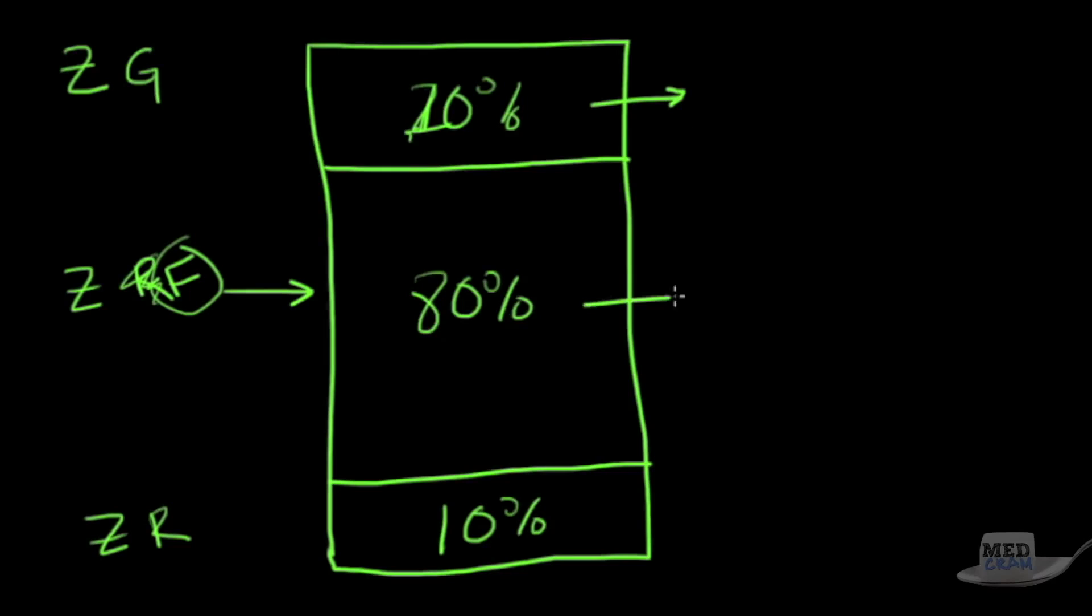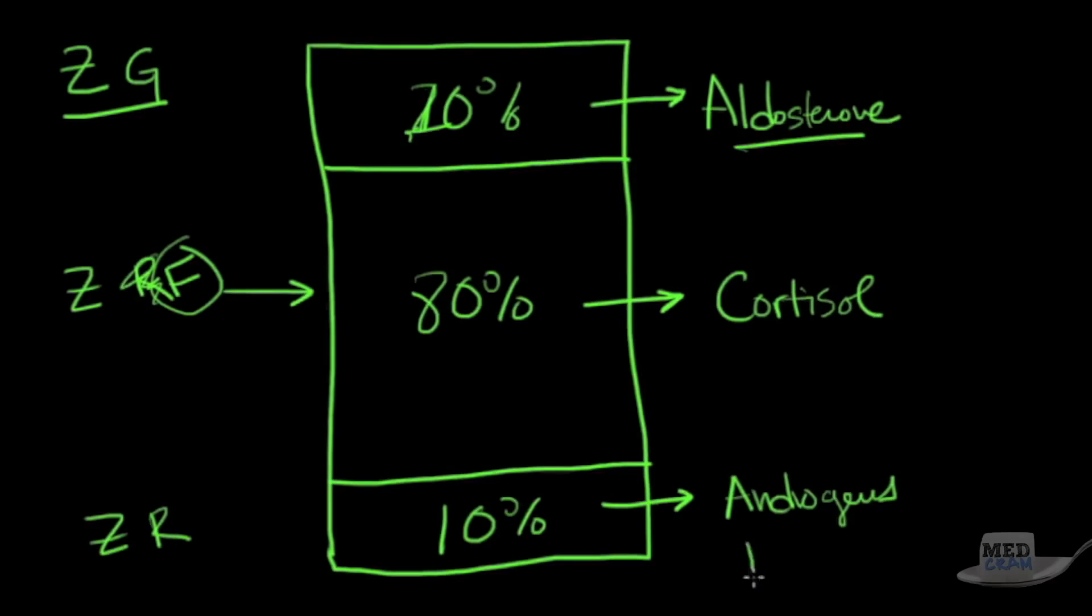So what are the major hormones that are coming out of this? The major hormone out of the zona glomerulosa is aldosterone. The major hormone out of the zona fasciculata is cortisol. And the major hormone coming out of the zona reticularis are androgens. The biggest one is testosterone.